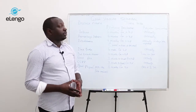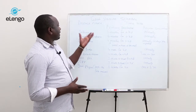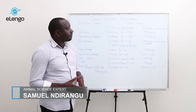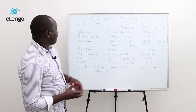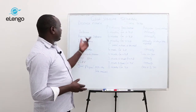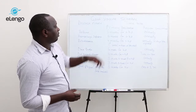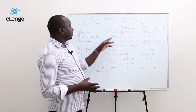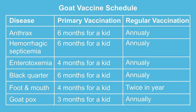We are going to look at the vaccination schedule. We are going to categorize diseases and also the time in which the vaccines are being administered to the animal. We're going to start with anthrax, which is a bacterial disease. The vaccine is given to the young one six months after birth and it is done annually, every year.